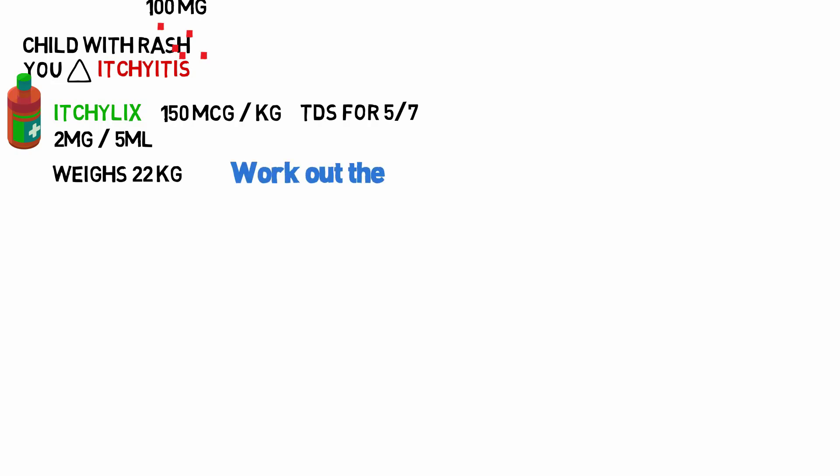So first of all, work out the dose. 150 micrograms per kilogram. So multiply the one kilogram by 22 to make 22 kilograms on the right-hand side of the equation. And whatever you do to the right-hand side, you're going to do to the left-hand side. So 150 micrograms times 22 is 3,300 micrograms.